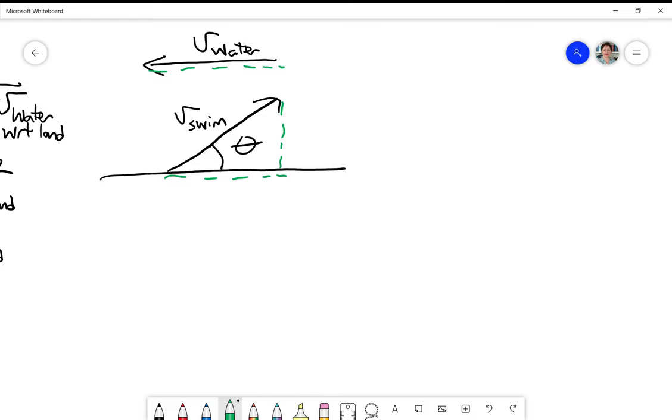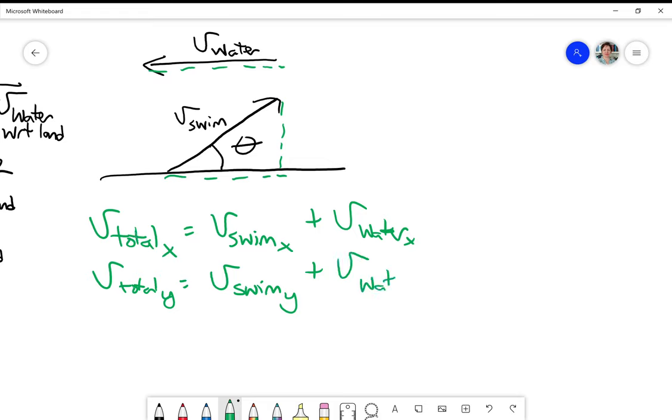So let's call that V total. V total in the X direction is V swim in the Y direction plus V water in the Y direction, which is V swim cosine theta and minus to take into account the water's direction, V water.